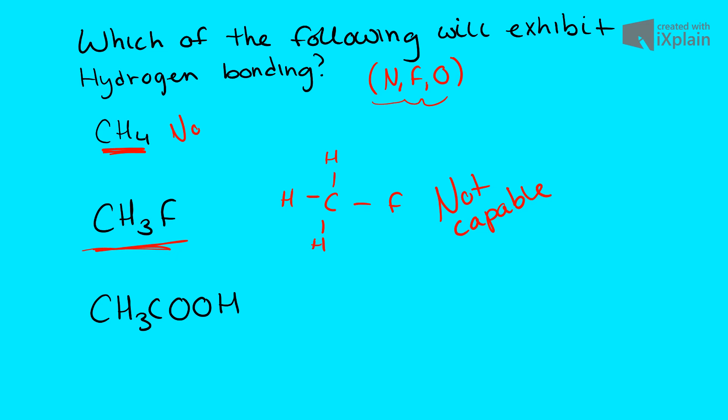If we look below at acetic acid, we have CH3COOH. And for this one, we're going to need to write out the Lewis structure.